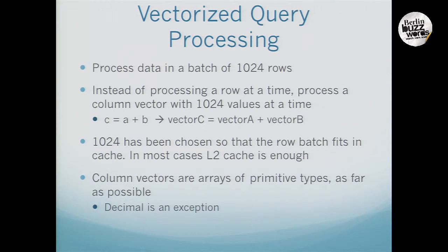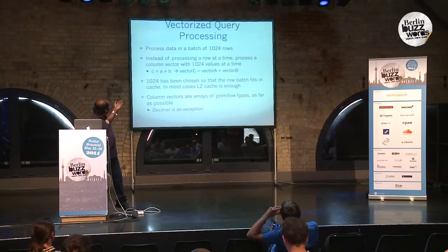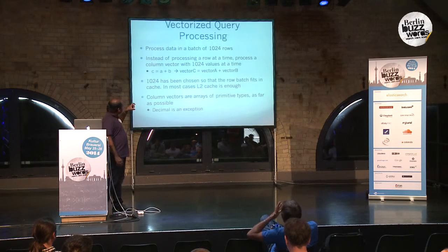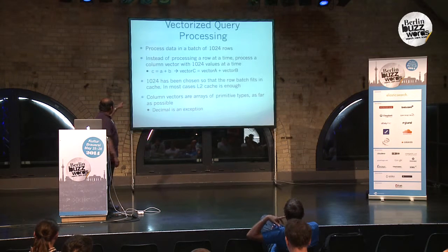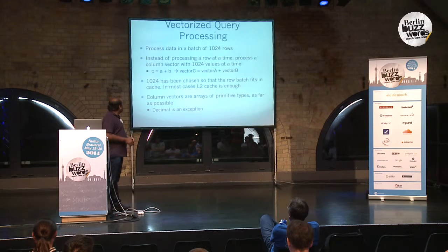Introducing vectorized query processing. The key idea is that you organize your data in the form of a batch. A batch consists of 1024 rows — 1024 is not a magic number, it can be tuned — but the idea is that the whole batch should fit in cache, if not L1 then L2 cache at least. You can visualize a batch as a set of vectors, where each vector represents a column, and processing happens a vector at a time. For example, a simple computation like C = A + B, where A, B, and C are values in a column, is transformed into: vector C = vector A + vector B. And hence the name vectorization.